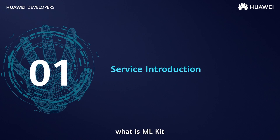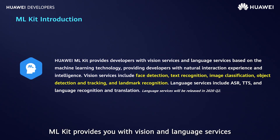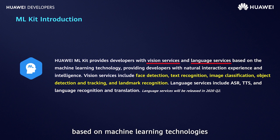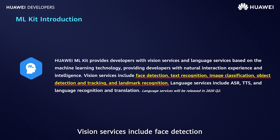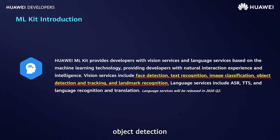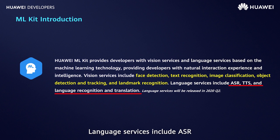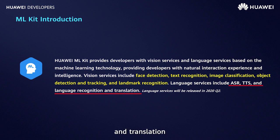What is ML Kit and what capabilities does it provide? ML Kit provides you with vision and language services based on machine learning technologies to implement AI capabilities, helping you achieve business success. Vision services include face detection, text recognition, image classification, object detection and tracking, and landmark recognition. Language services include ASR, TTS, language recognition, and translation.